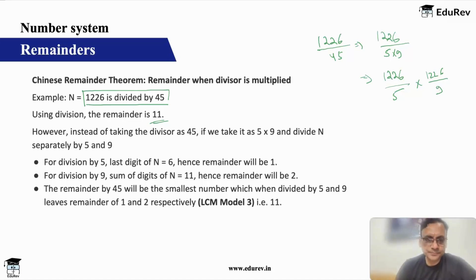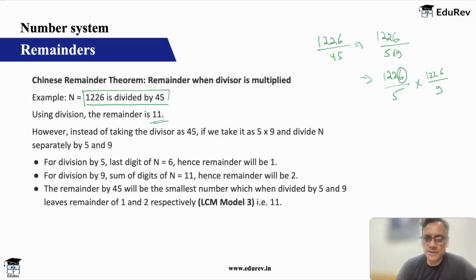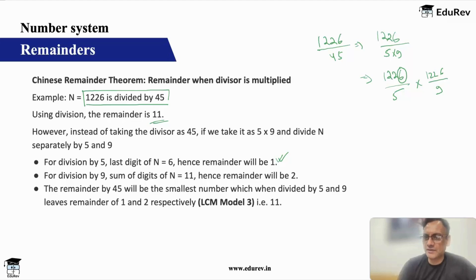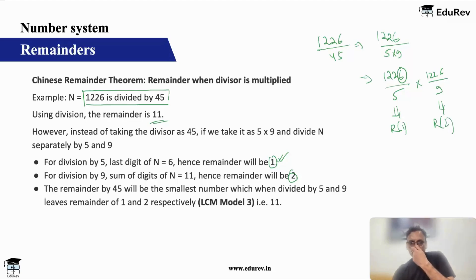So let us divide 1226 by 5. For 5, you look at the last digit. Last digit is 6, and 6 divided by 5 gives remainder 1. When you divide 1226 by 9, for 9 you use the sum of digits rule: 6 plus 2 plus 2 plus 1 is 11. 11 divided by 9 gives remainder 2. So dividing by 5 gives remainder 1, and dividing by 9 gives remainder 2.